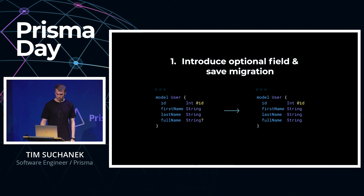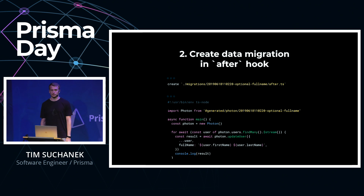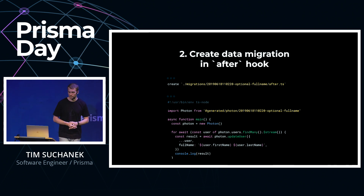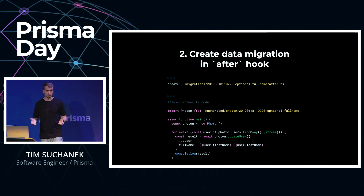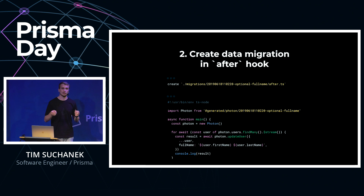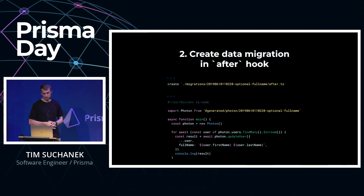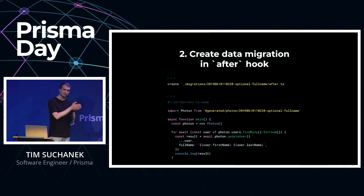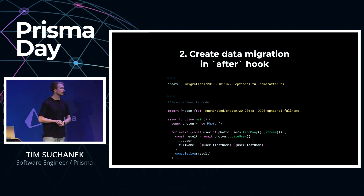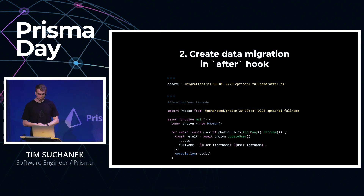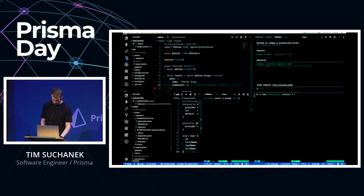The first step is making the full name optional. Now we want to also migrate our existing data — we don't want their full name field to be empty. This is where the new migration hook system comes into play. We have a folder per migration, with a timestamp and a name that you have chosen. With a convention-based system, if you call a file after.ts, we will pick it up after the migration of that particular data model has been performed. We are generating for you a Photon client specifically for that migration, so you can also do your data migrations in a type-safe manner.